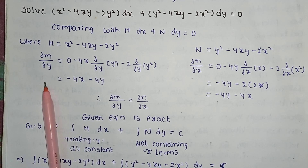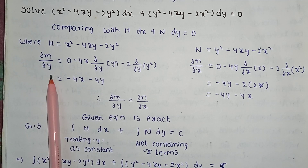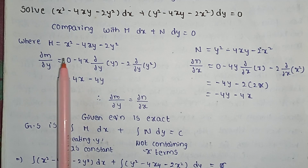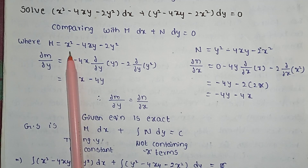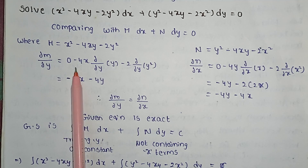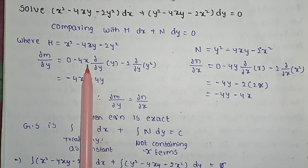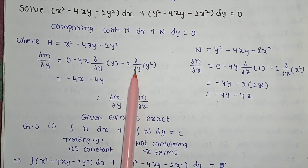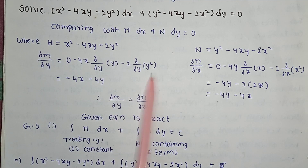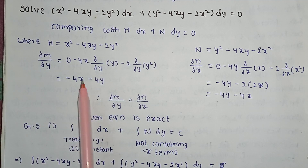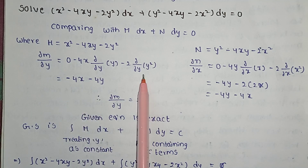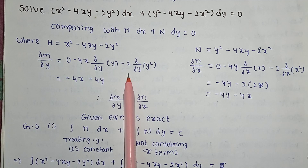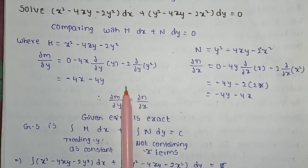∂M/∂y — differentiating with respect to y, keeping x as constant: x² gives 0, minus 4x · ∂/∂y(y) minus 2 · ∂/∂y(y²) equals minus 4x minus 4y.